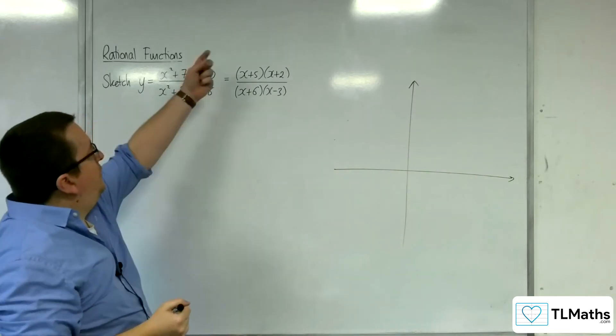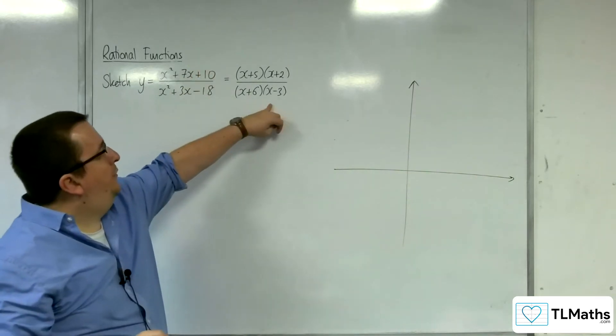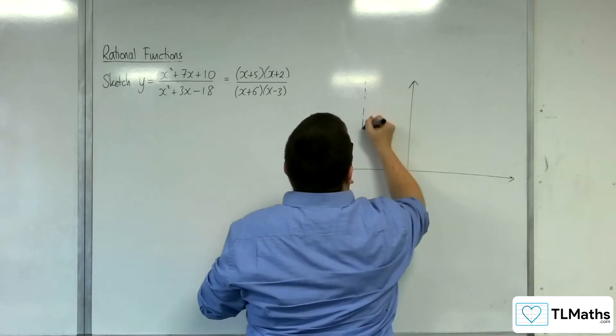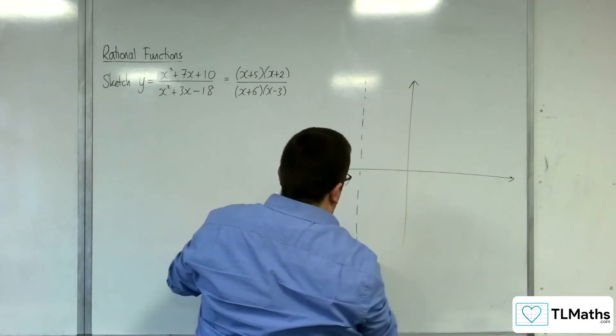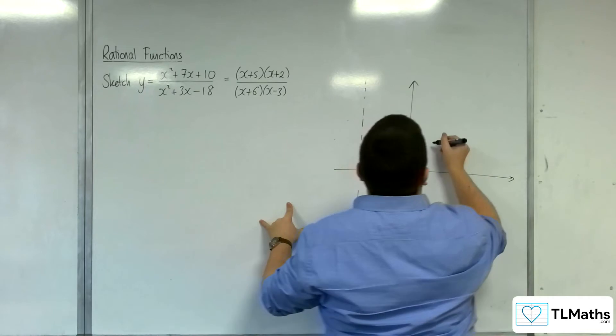Vertical asymptotes first. That's when the denominator is 0, so minus 6 and 3. So minus 6 and 3.